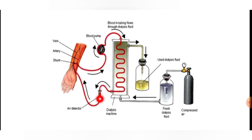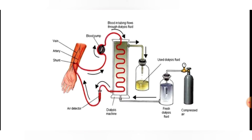The pure blood is then sent back into the patient's body through the vein. The machine also has a compressed air detector. When taking blood out, anticoagulant is added; when putting pure blood back, anti-heparin (coagulant) is added before sending it back.